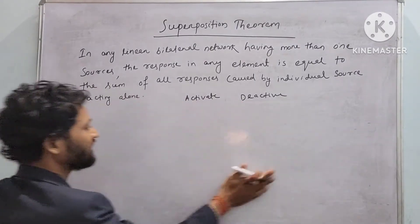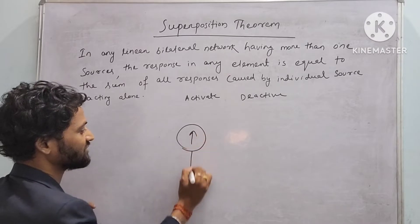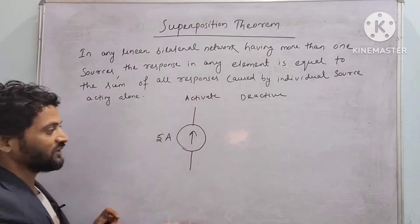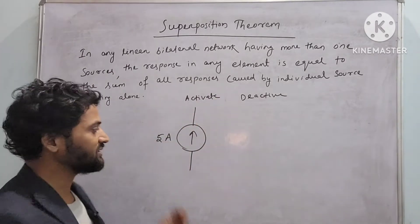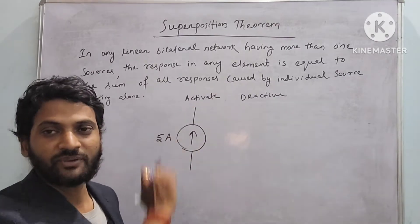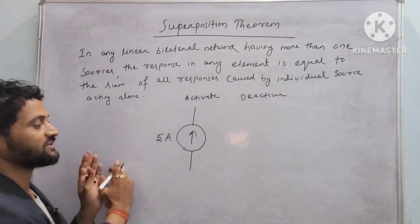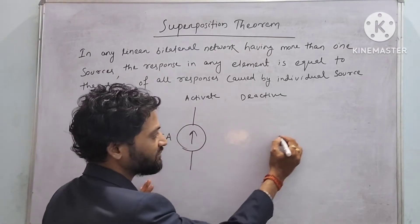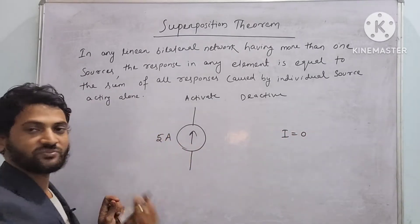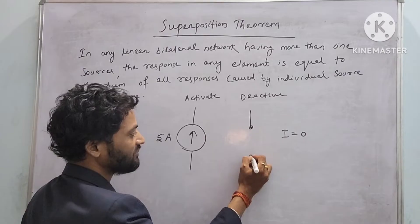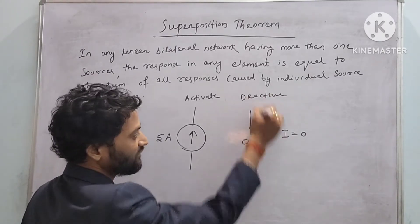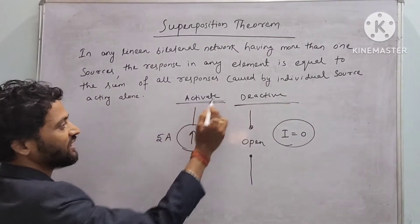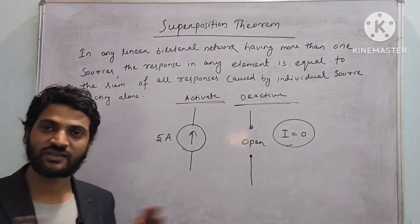Similarly, if we have a current source — let the magnitude be 5 ampere — activation means we keep the source as it is in the circuit so it can deliver 5 ampere. Deactivation means we have to make the current 0. If we open the terminal, the current will be 0. That is the meaning of deactivation of a current source.